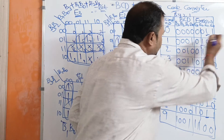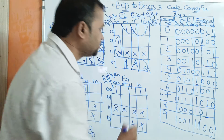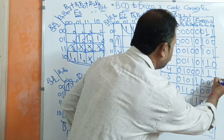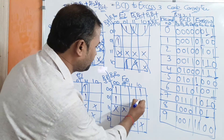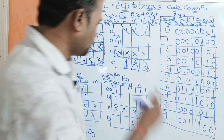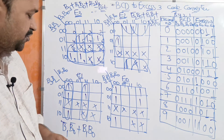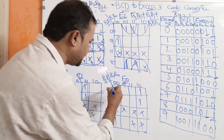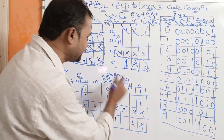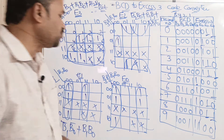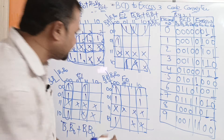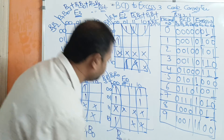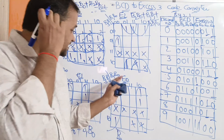Now let us evaluate E0. We can combine 8 cells into one group because 0, 0, 1, 0 cells are adjacent and differ by only one variable B1. B3 and B2 values are changing so we ignore them. The common second bit is B0', so the simplified expression for E0 is B0'.